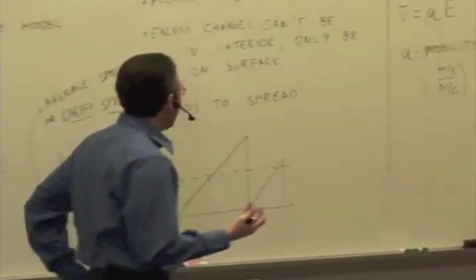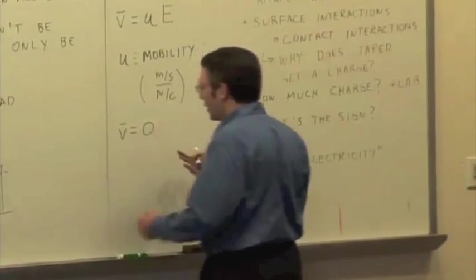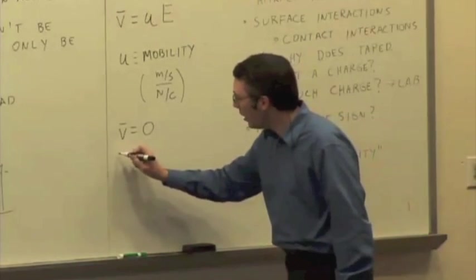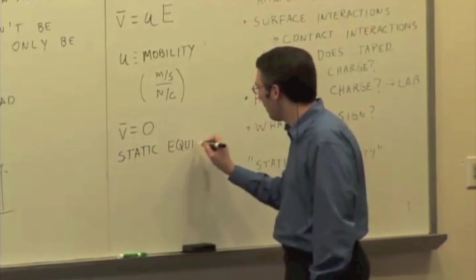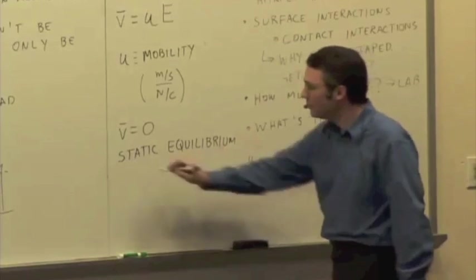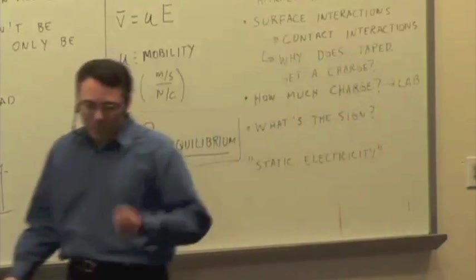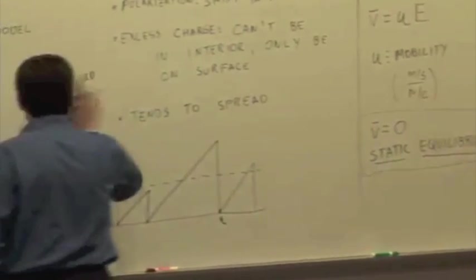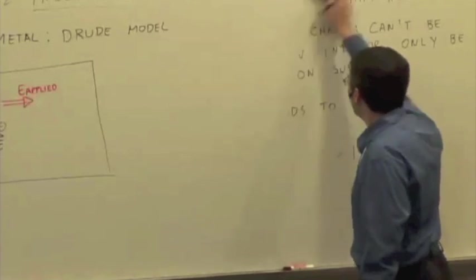So given this, there's a special case when the average speed is equal to zero, when the electrons overall net are not moving, we call this situation static equilibrium. So static equilibrium, charges aren't moving. Let's look at what's possible and what isn't when we have a situation of static equilibrium.